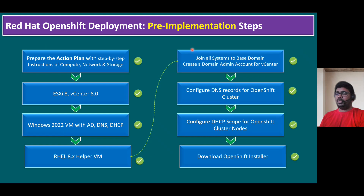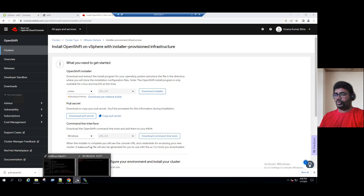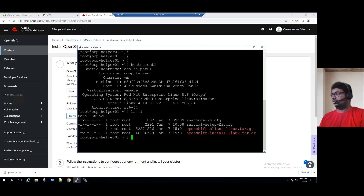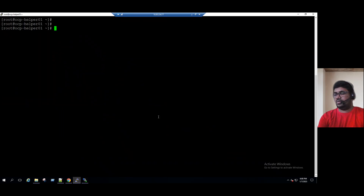Pre-implementation steps — we are already familiar with those. Now let's start with how to generate a key pair for OpenShift cluster nodes SSH access. The command is SSH hyphen keygen. We have to run it on our OCP helper VM. Our helper VM is connected, so let me clear the screen. The command is SSH-keygen — this is the only command needed to generate the key.